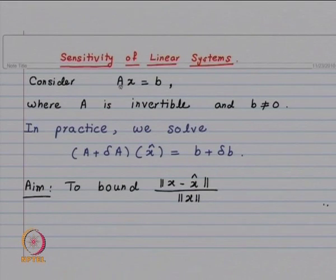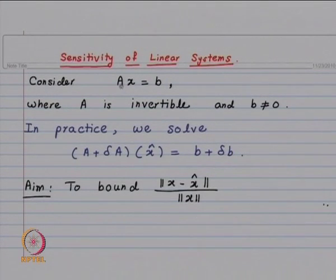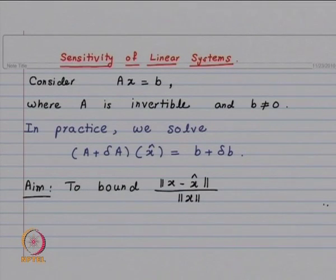Our assumption is Ax = b, where A is an n×n invertible matrix and the right-hand side is a non-zero vector. As a consequence, our exact solution x is also going to be non-zero. In practice, you are going to solve (A + δA)x̂ = b + δb, and our aim is to bound ‖x − x̂‖/‖x‖. The norm is going to be either 1-norm, 2-norm, or infinity norm.